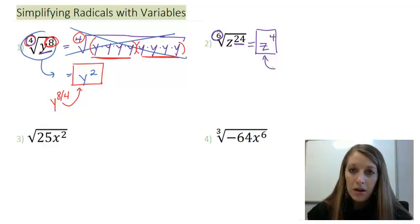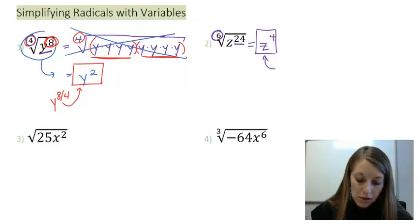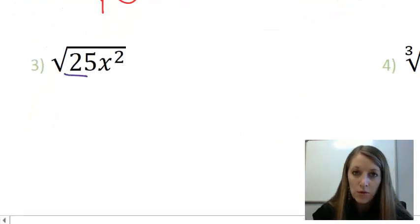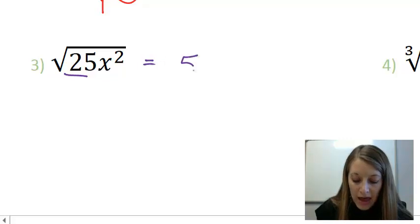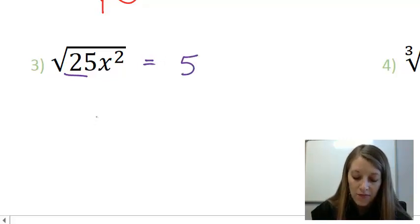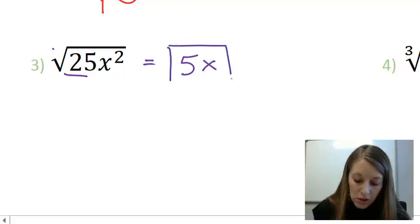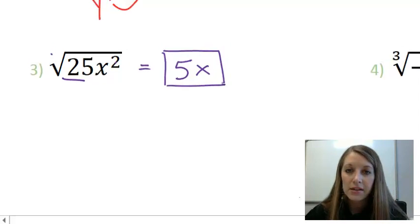Now, example 3 and 4 not only have variables in it, but they also have numbers or coefficients in it as well. And it's no big deal. Just take them piece by piece. So in example 3, the square root of 25 gives you 5 because 5 times 5, 2 times, gives you 25. And the square root of x squared, well, my square root and my square cancels out, and that just leaves me with x. So my final answer here is 5x.